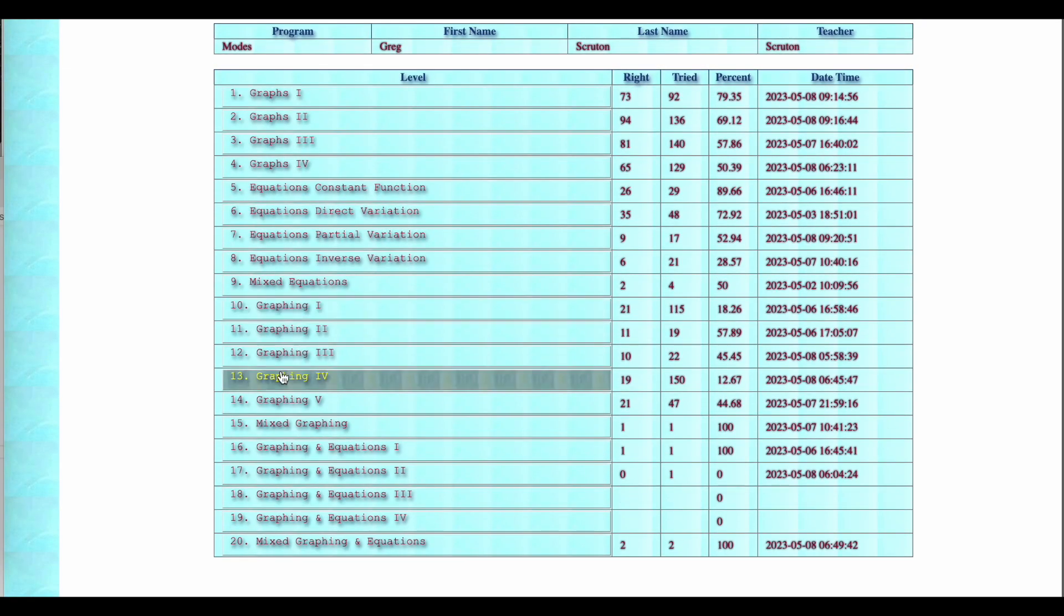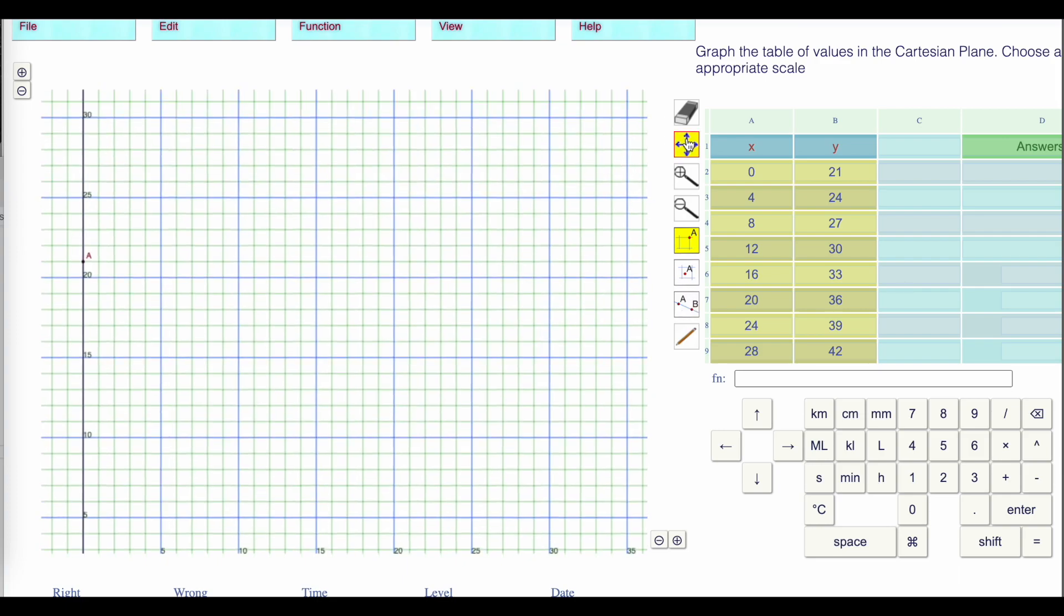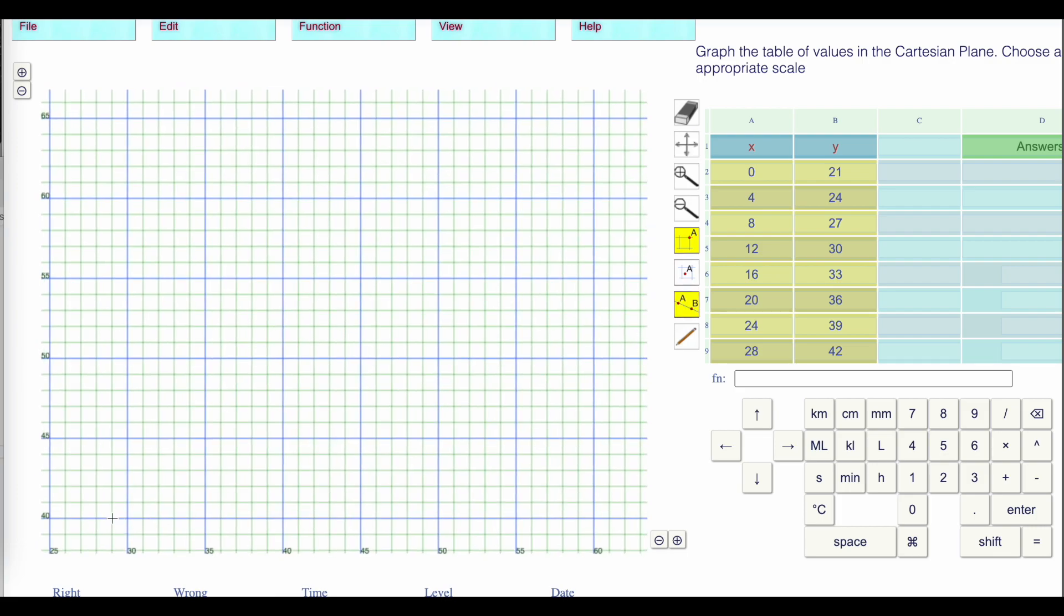We have levels where you have to find the equation, levels where you have to graph. Let's do a partial variation graph. Here we have 0, 21, which is right here. That's my first point. My last point is 28, 42. I don't see the 42, so I'm going to use my translation tool. Press the down arrow to move things a little faster down. Then 28, go up to 42. You can drag this. 28 is right here, 42. It's there. Notice it makes the line for you.